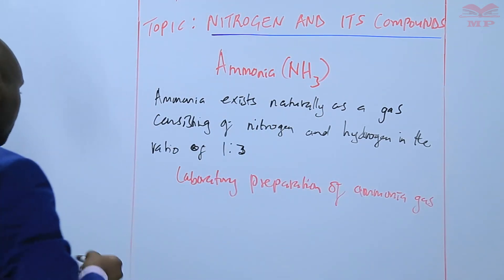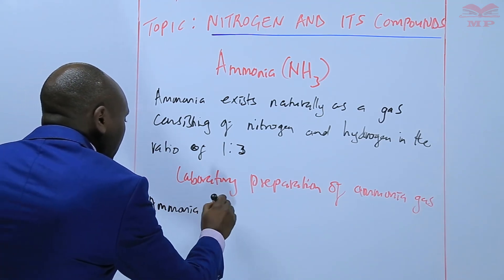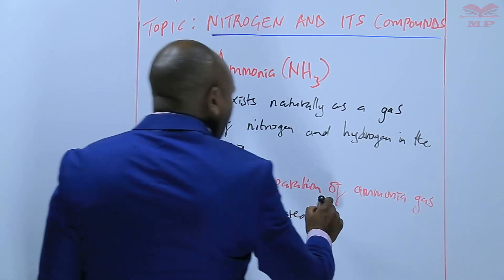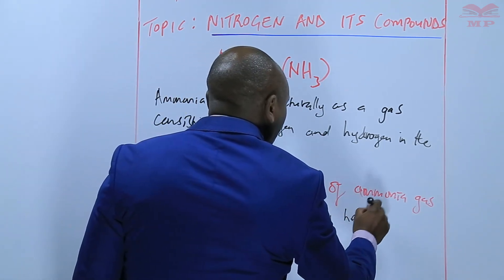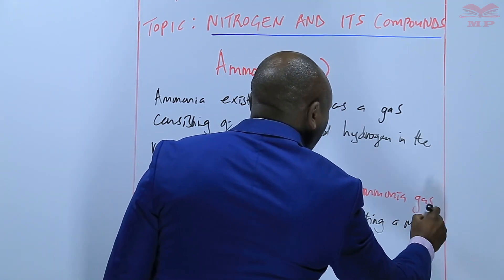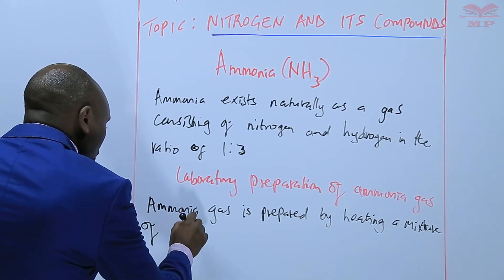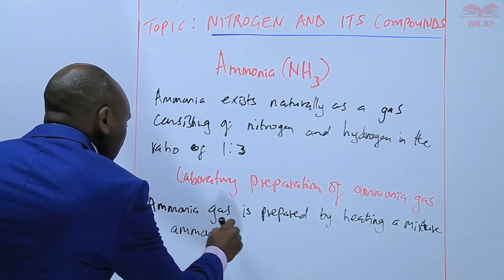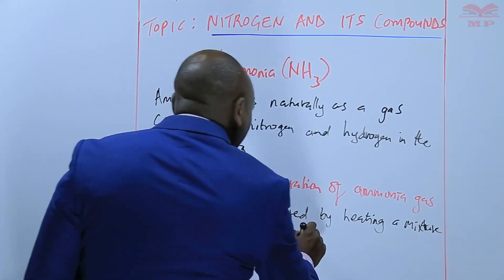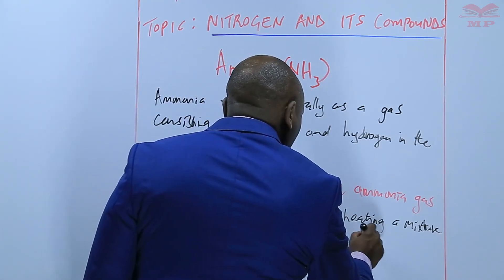Ammonia is prepared by heating a mixture of ammonium chloride — although we can use any ammonium salt — and any strong base, for example calcium hydroxide.